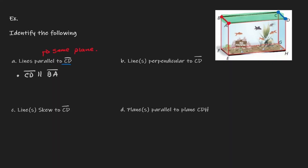Is that the only line segment CD is parallel to? If instead of concentrating on the upper plane, we consider the plane on the right-hand side, then notice that CD is also parallel to GH — they are on a different plane, but they are also not intersecting each other. So from the perspective of a different plane, CD is also parallel to GH. Note that this does not mean BA is parallel to GH, since they are on different planes.